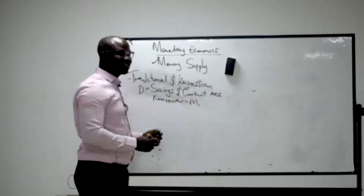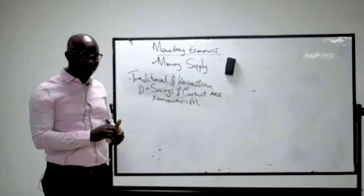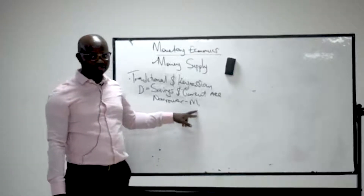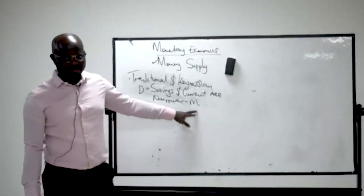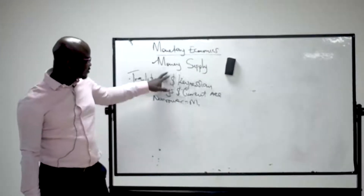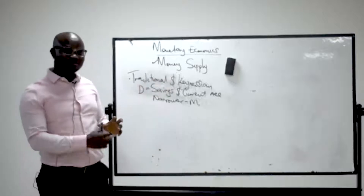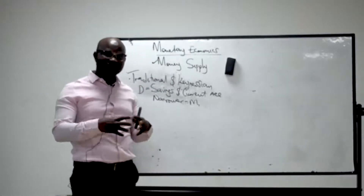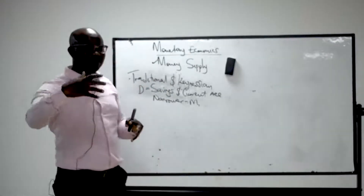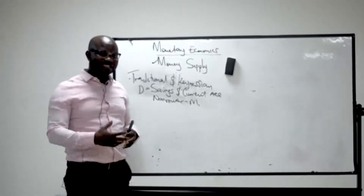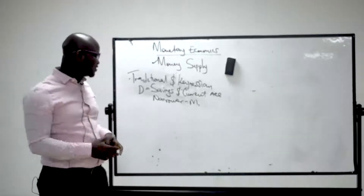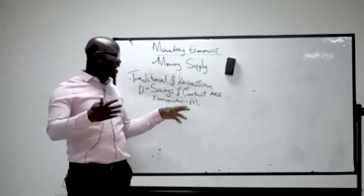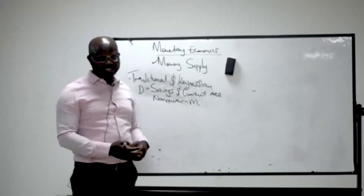This is called NARWA and it is equal to M1. So according to them, money supply is the combination of the currency in the hands of the public plus the demand deposit, and the demand deposit is equal to the savings account and the current account.